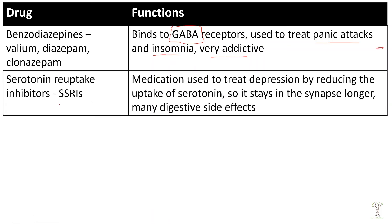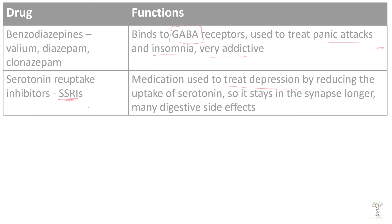Serotonin reuptake inhibitors, or SSRIs, are depression medications. Normally, serotonin released into the synapse is taken back up and released again later. An SSRI prevents that reuptake, so serotonin stays in the synapse and keeps acting on the target cell to reduce depression. Because so much serotonin is produced by the digestive system, there can be digestive side effects in the early stages of taking SSRIs.